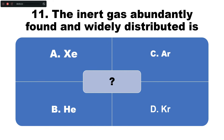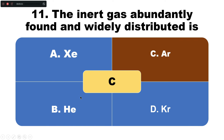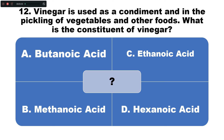Question number eleven: The inert gas abundantly found and widely distributed in the atmosphere is — option A: xenon, B: helium, C: argon, D: krypton. The correct answer is option C — argon is the inert gas most abundantly and widely distributed in the atmosphere.